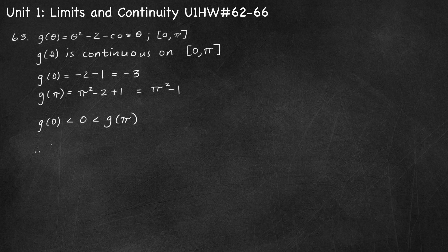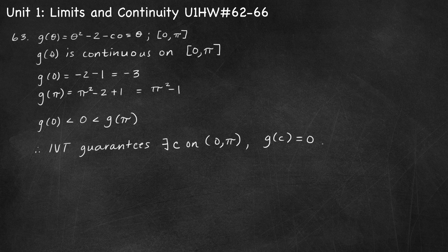Therefore, the intermediate value theorem does guarantee that there exists some value c — some x value — on the interval from 0 to pi, such that our function evaluated at c equals 0.